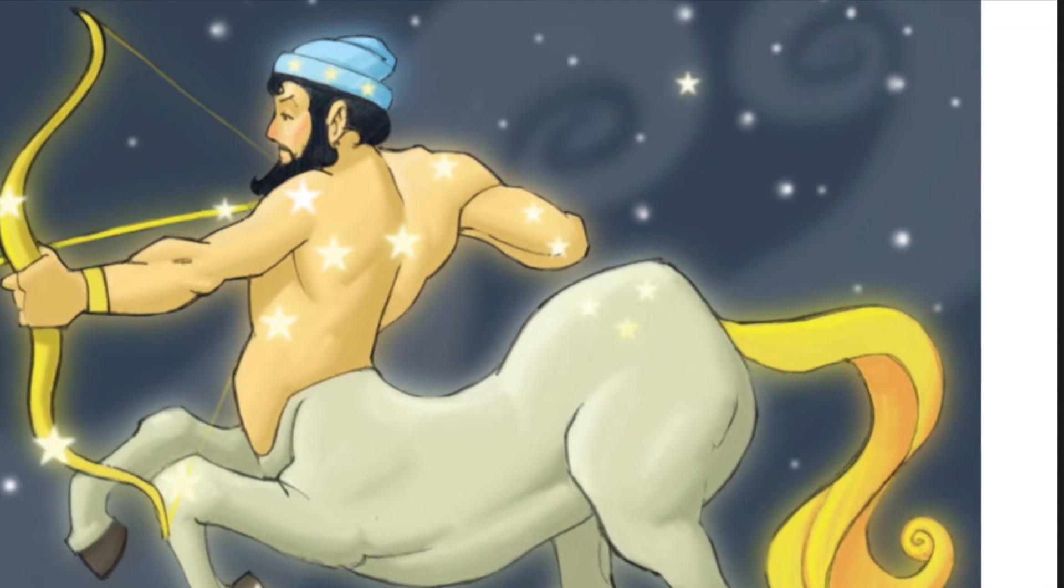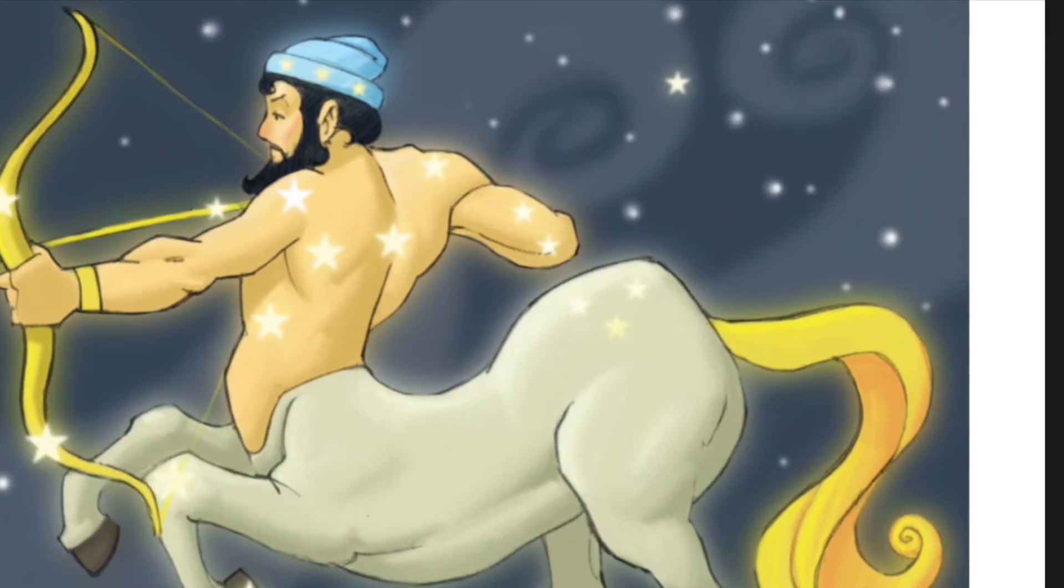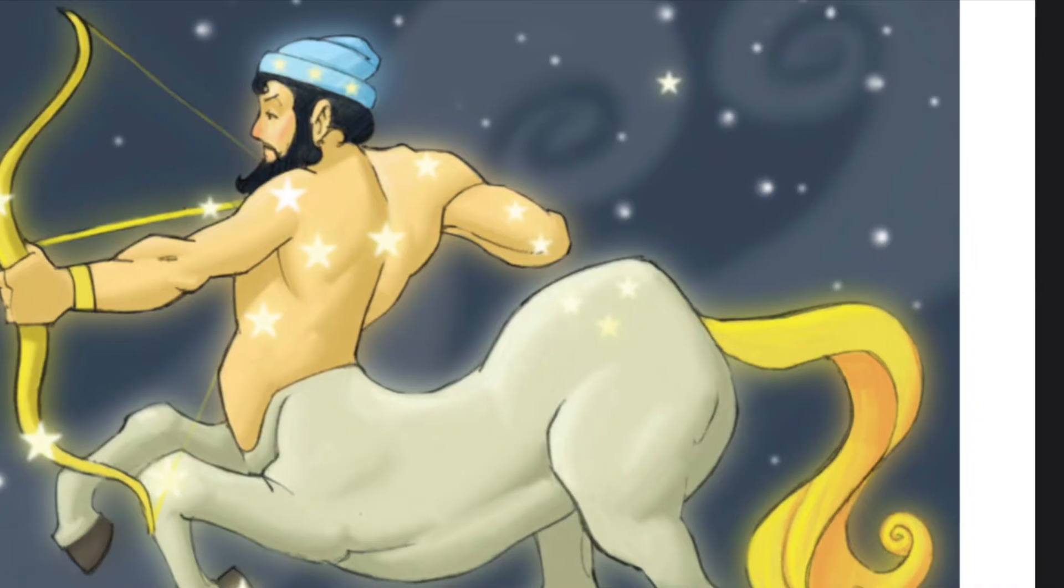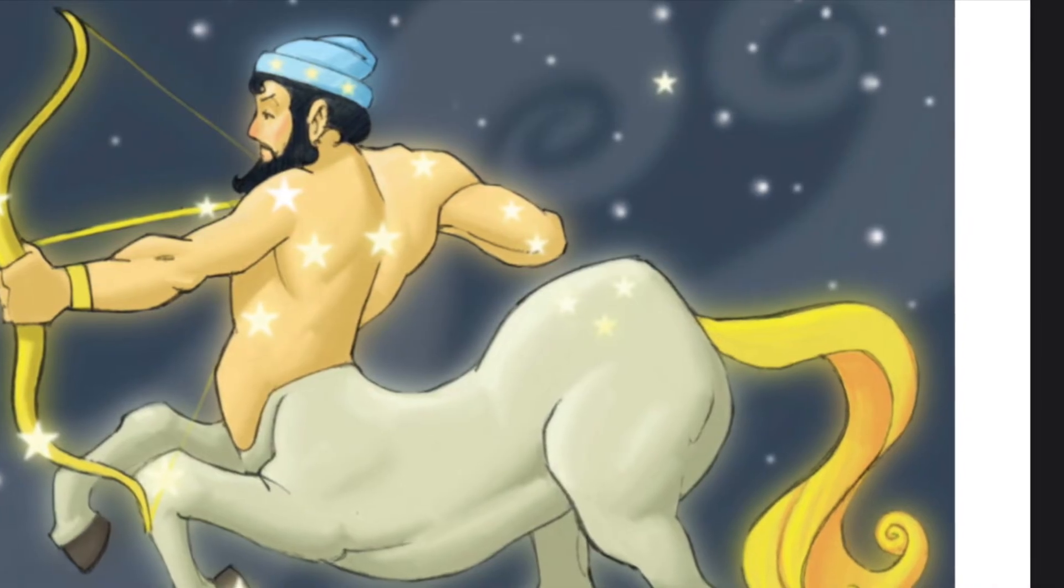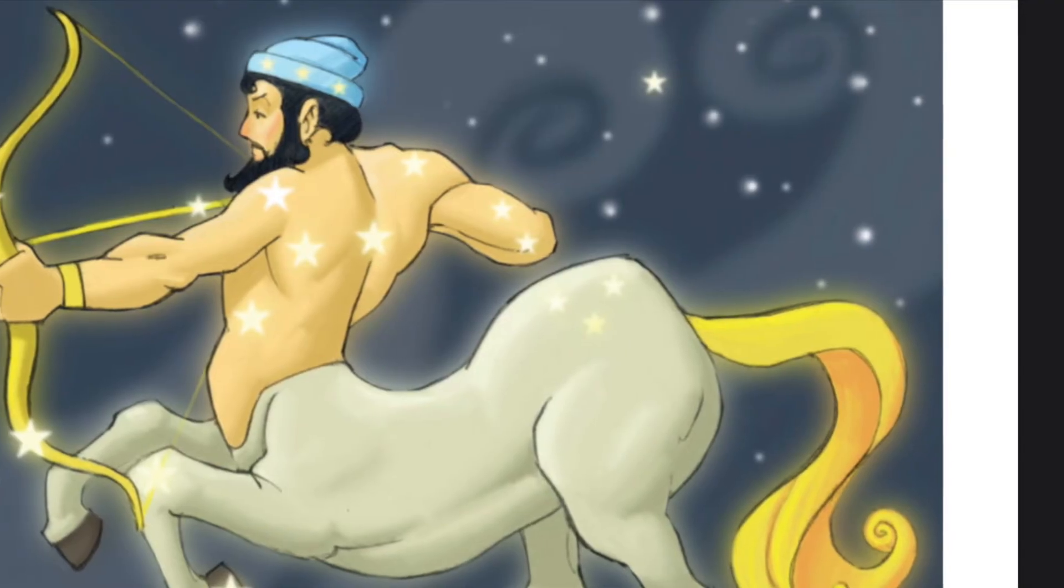The ancient Greeks believed that the stars had been placed in the sky by gods in order to tell stories and teach lessons. The Greeks identified certain groups of stars in the night sky that seemed to form specific shapes. These shapes are called constellations.